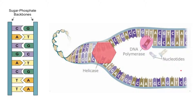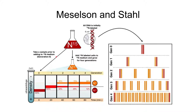An opposing theory was conservative DNA replication, which suggested that the original DNA molecule acts as a template and a complete photocopy is made, so one resulting molecule would be entirely made of original strands and the other entirely of new strands. This theory was rejected. The semi-conservative model was proposed by two scientists, Meselson and Stahl, and their experiment is one you need to be familiar with.